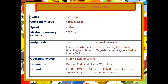Here are the important summary points for first generation computers. They existed between 1942 to 1955. The main component used was vacuum tubes. The working speed was in milliseconds. The input devices used were punch cards, paper tape, and magnetic tape. The secondary storage device was magnetic drum. The language used was machine language. Examples include ENIAC, EDVAC, EDSAC, and IBM 650.